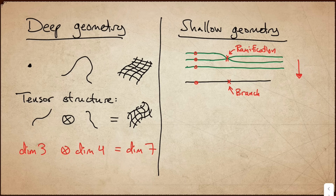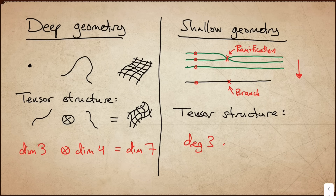The key point now is that in shallow geometry, there is also a tensor structure, where the basic idea is that for each point on the line, you take the Cartesian product of the finite sets above that point. So degree three times degree four would now be of degree 12 — completely different from the deep case.